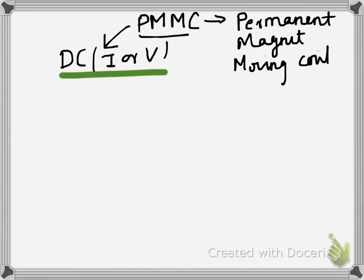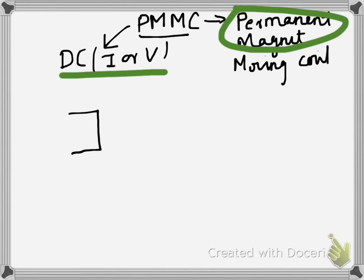Let us try to understand the working by going to the name only. It says it is a permanent magnet type, so permanent magnet type means it has to have a permanent magnet. Let's consider this as a permanent magnet — let's call it the north pole and let's call it the south pole of the magnet.